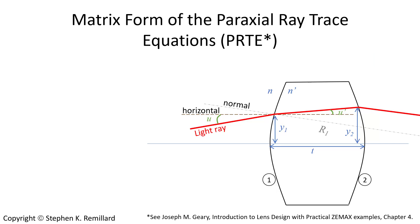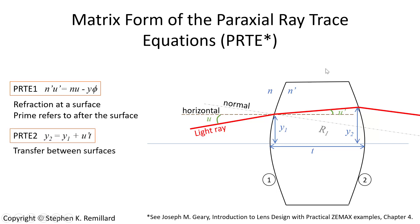There are two paraxial ray trace equations, per the organization of Joe Geary and his textbook on Lens Design. Paraxial ray trace equation number one is Snell's law of refraction at a surface, referencing the angle to the horizontal rather than the angle to the normal, and that's angle u. Paraxial ray trace equation number two describes the transfer of the ray from one surface to the next surface, for example from surface one to surface two. It is literally the equation of a straight line.